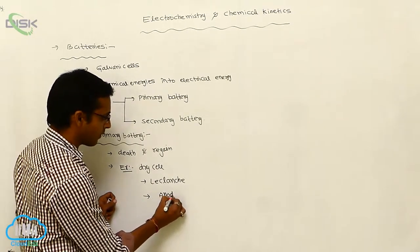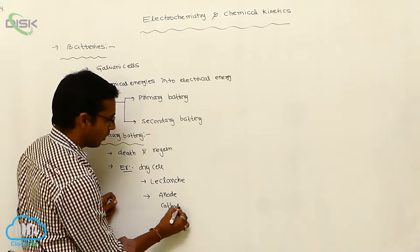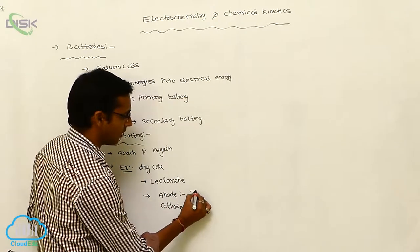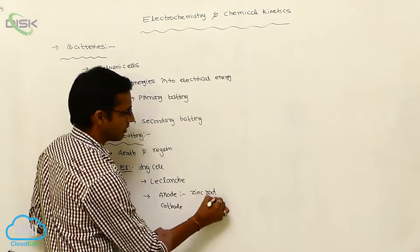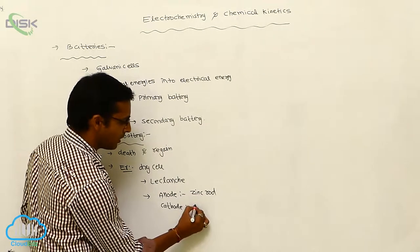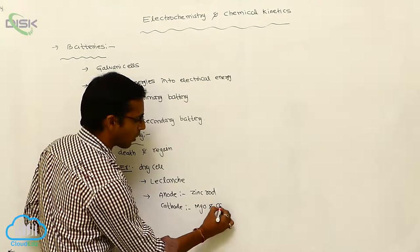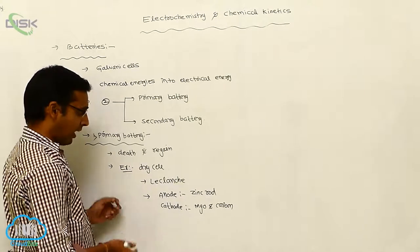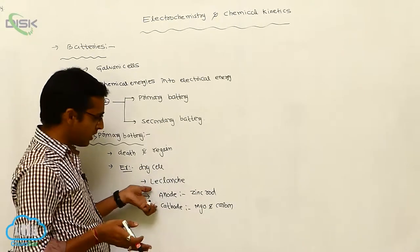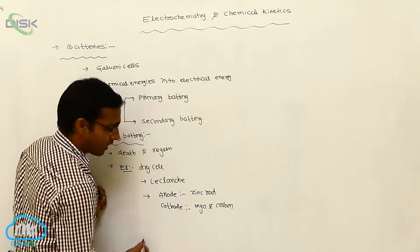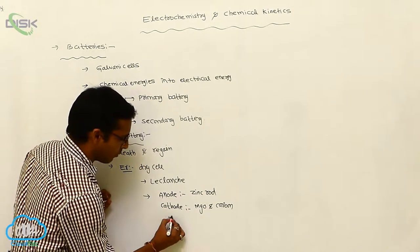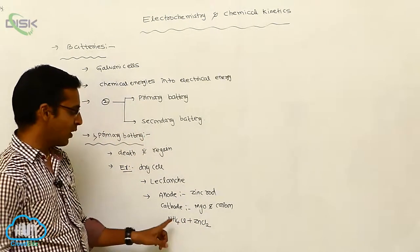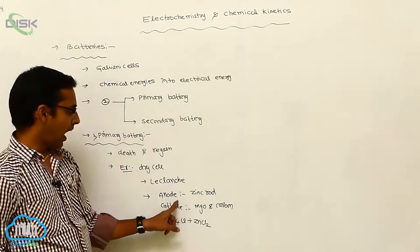In any battery, we consider two electrodes: an anode and a cathode. In the dry cell primary battery, the anode is a zinc rod, and the cathode is manganese oxide mixed with carbon powder. The space between the electrodes is filled by an electrolytic solution of ammonium chloride and zinc chloride.